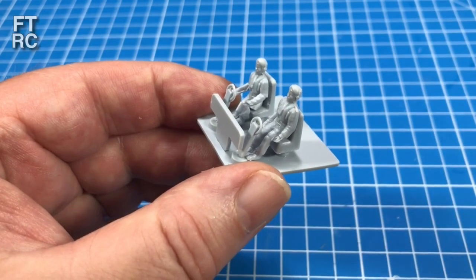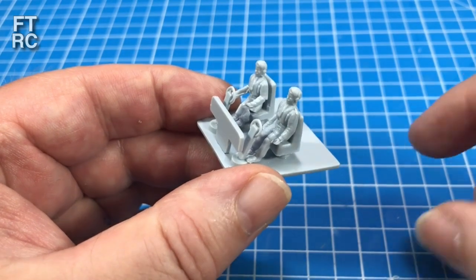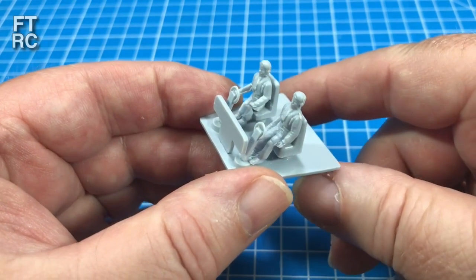Now starting at step three of the instructions, because steps one and two involve putting in all the clear parts and fuselage, which I'm not going to worry about for the moment. I need to do a lot of prep and painting.